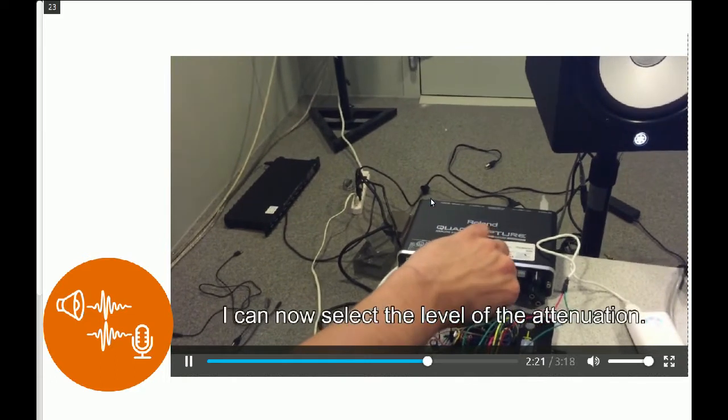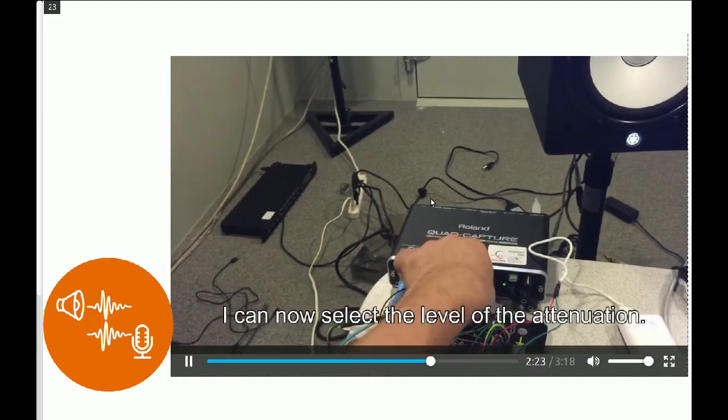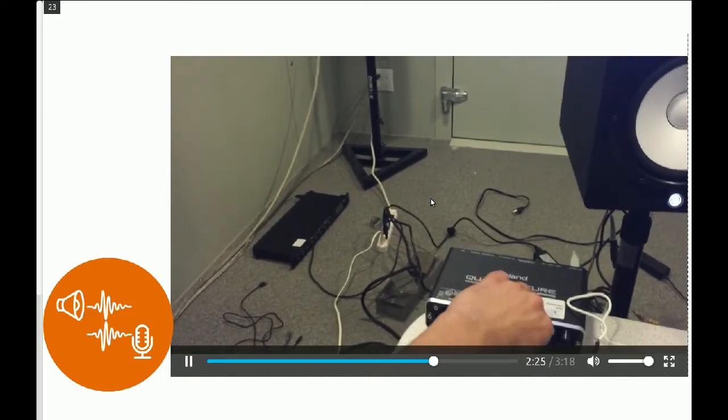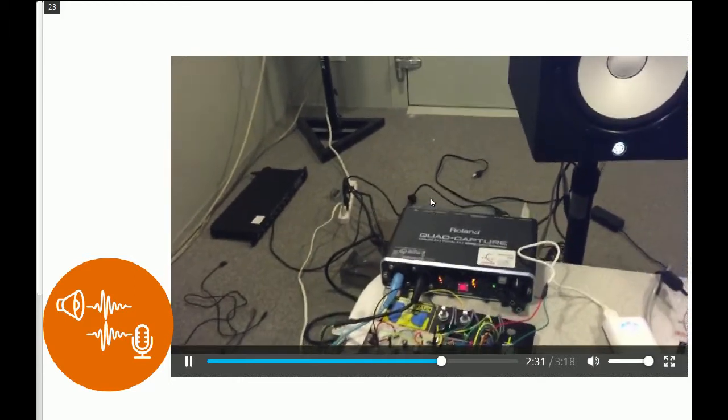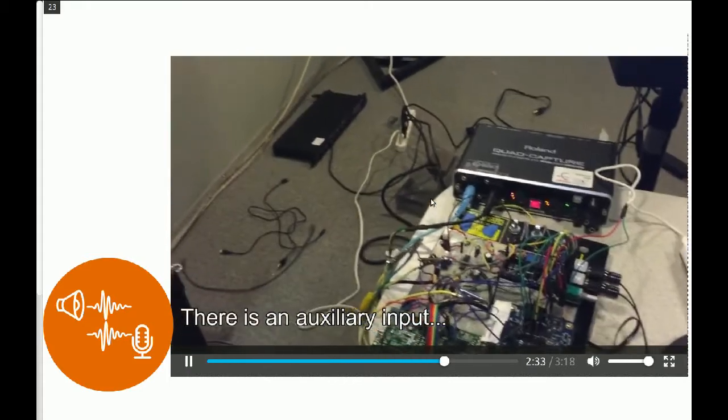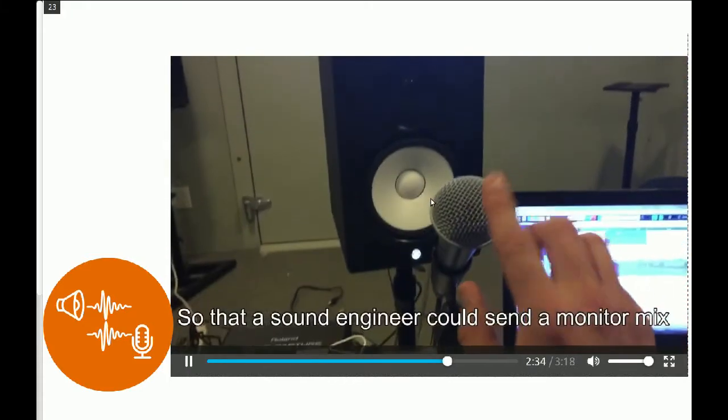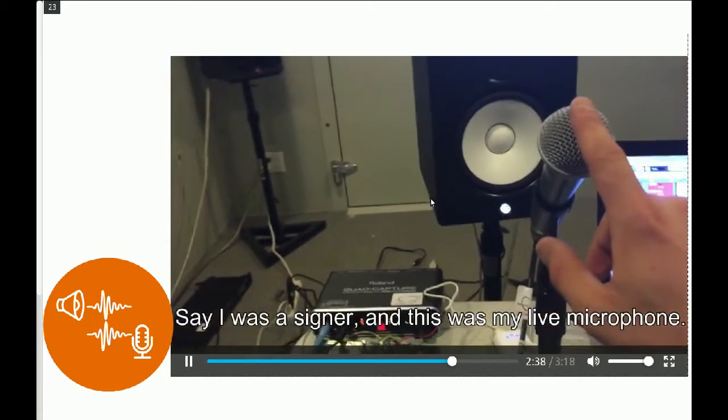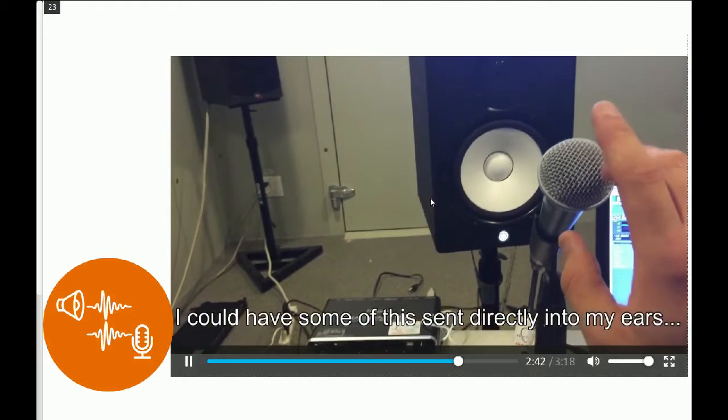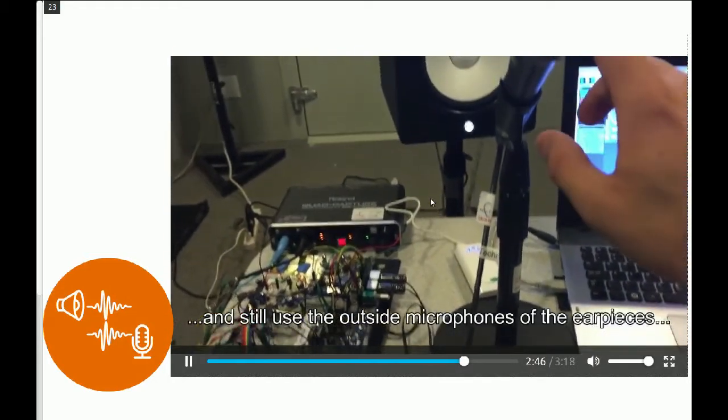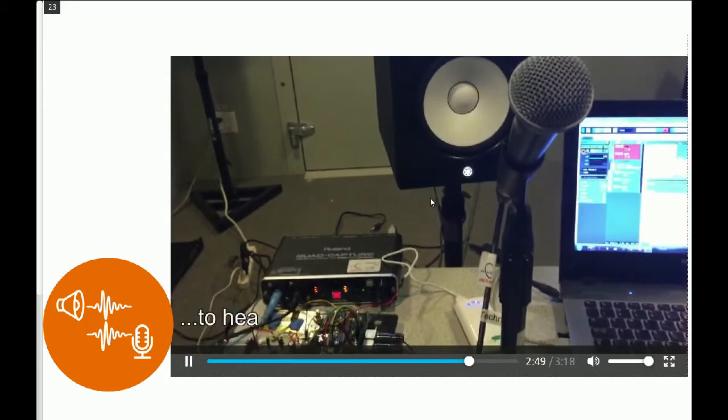I can now select the level of my attenuation. And then last but not least, there is an auxiliary input so that the sound engineer could send me a monitor mix. So say I was a singer and this was my live microphone. I could have some of this sent back directly inside my ears and use the outside microphone. Still use the outside microphone of my earpiece to hear what's going on around me and be connected to the crowd.